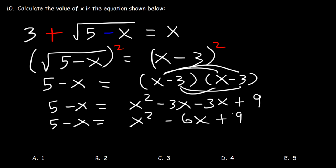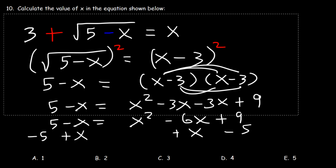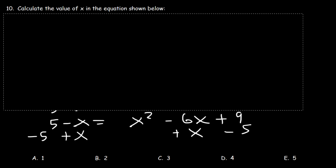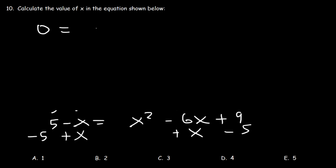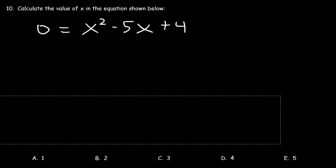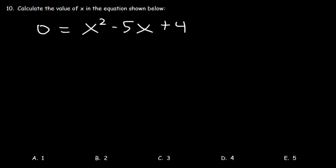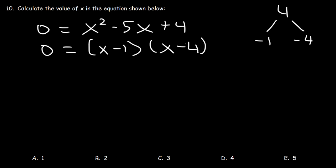Let's take everything from the left side and move it to the right side — add x to both sides and subtract both sides by 5. On the left we'll have 0. On the right it's x squared minus 5x, and 9 minus 5 is 4. Now let's factor: two numbers that multiply to 4 but add to negative 5 are negative 1 and negative 4. So it's x minus 1 times x minus 4. So x is equal to 1 and x is equal to 4 — two potential answers.